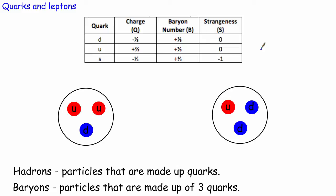By doing lots of different experiments scientists came up with the idea that protons and neutrons are made of something called quarks. There are six types or six flavours of quark, but for our A-level studies we only need to know three. The first is the down quark, given the symbol D.